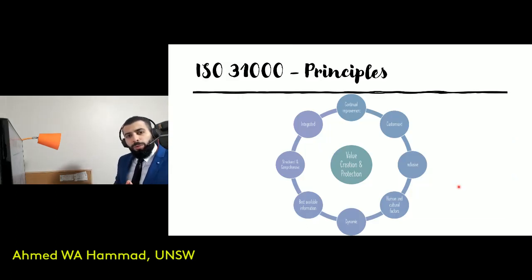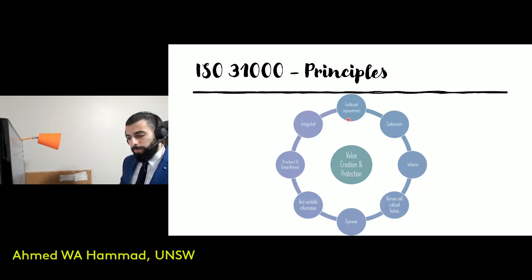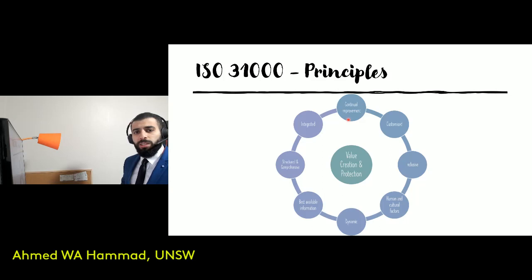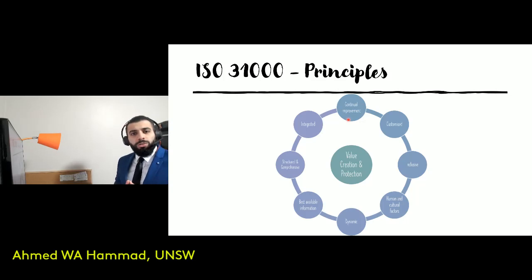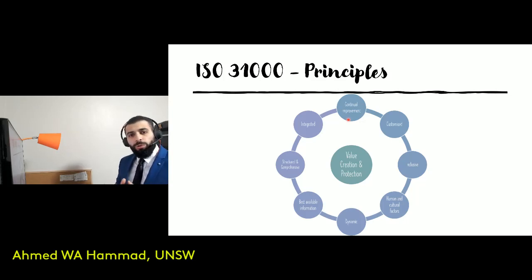In the ISO 31000 standards, you can see the diagram in front of you. These are the areas in the principles that are focused on. Continual improvement is where risk management is constantly improved via learning and experiences that the organization gets. Customized — it's a general standard, so each organization faces different issues, and the general concepts can be customized to suit the organization. Inclusive — all stakeholders impacted by the project are involved in the process. Human and cultural factors are also an integral part that the standards refer to, as these need to be included to pinpoint and deal with risks.